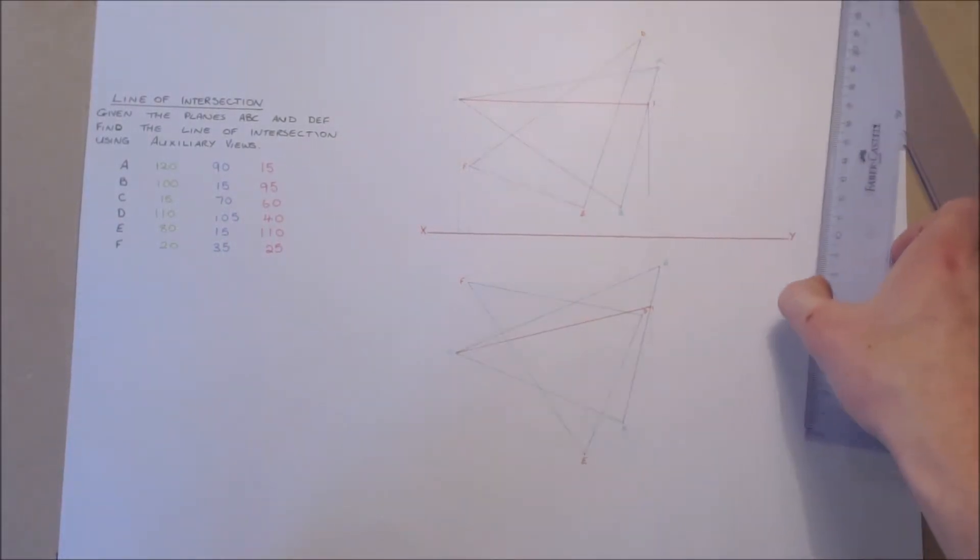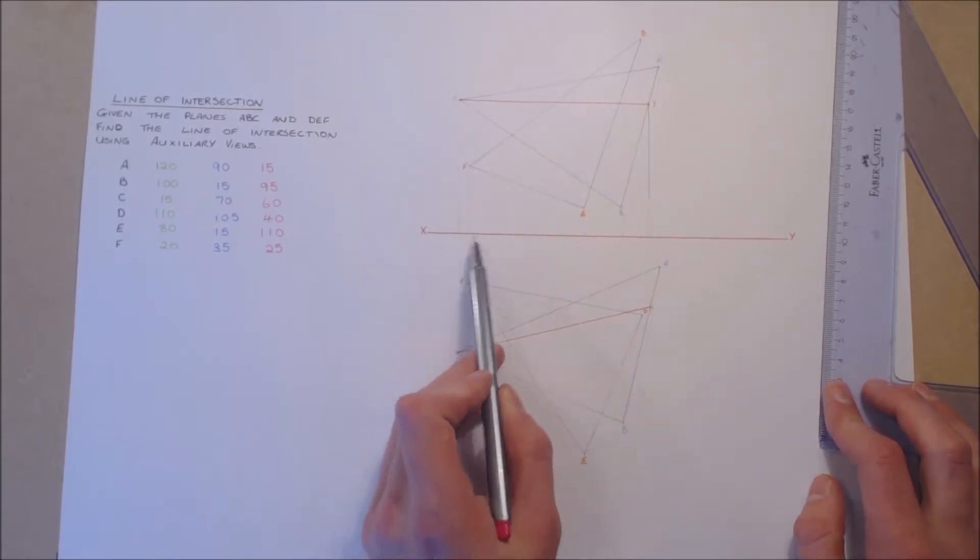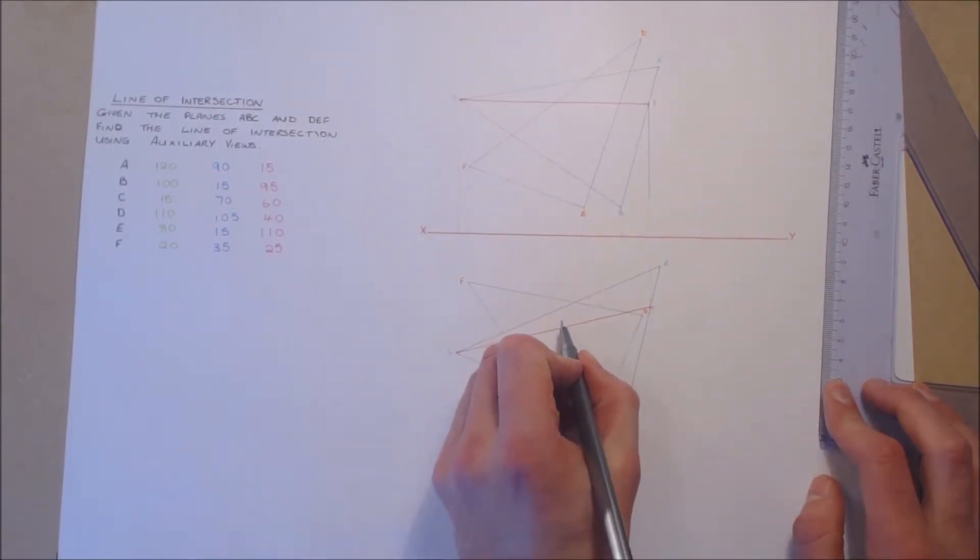Here we see the horizontal cutting plane is horizontal and parallel to the XY. Therefore, the projected plan of the line is a true length.